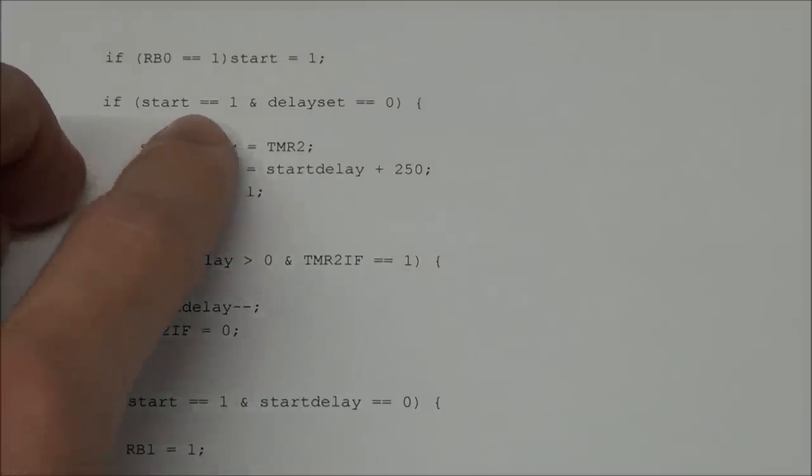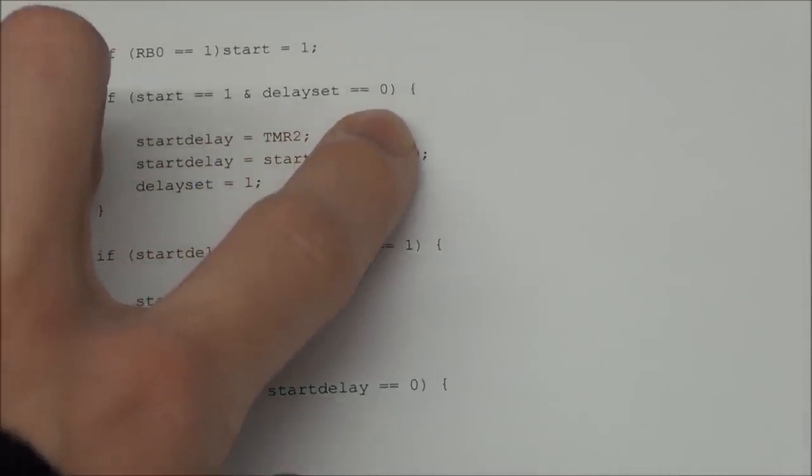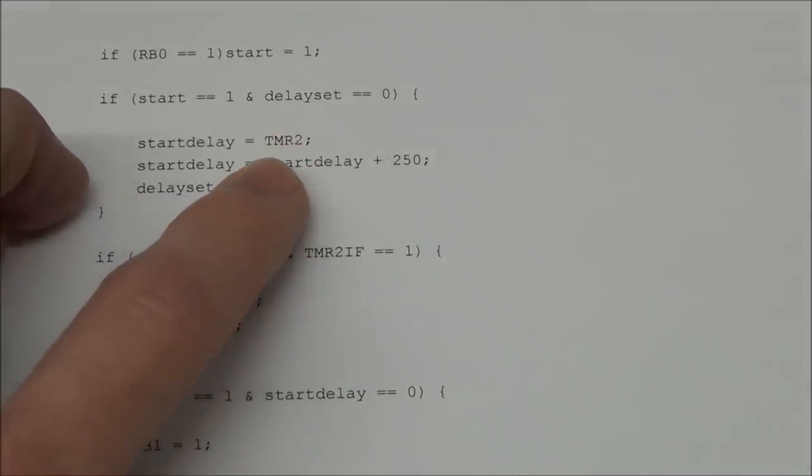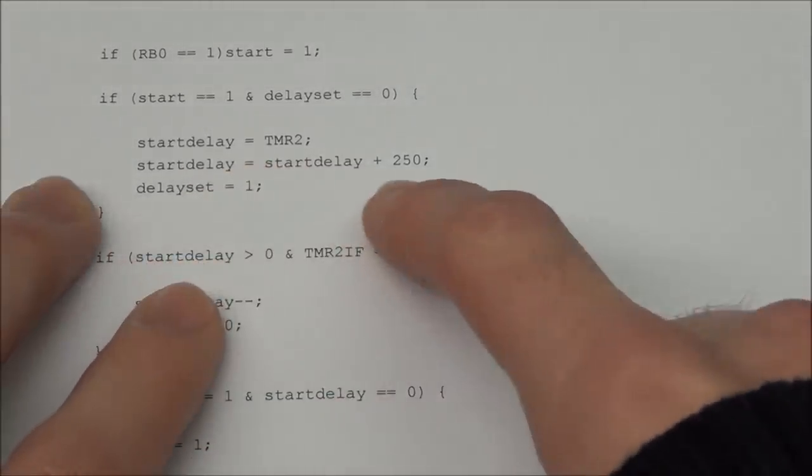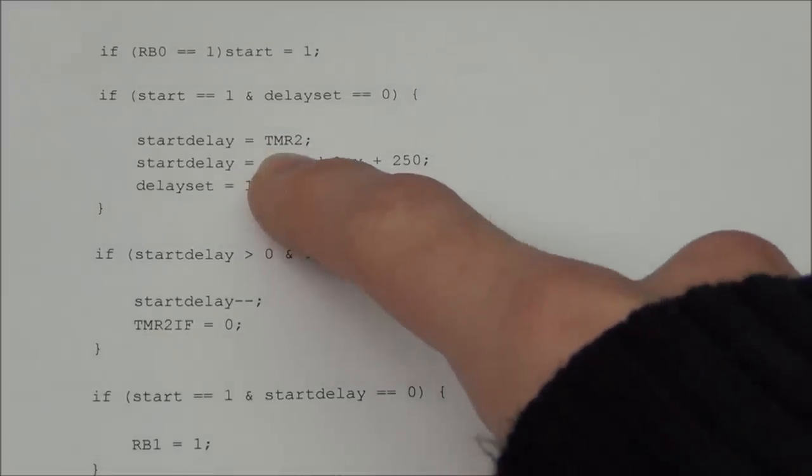And from now on we know that the game has been started. And down here it checks if start equals 1 and delay set equals 0. If this equals 0 then it knows that the game has just started and it will need to set a delay. So we will take the number that timer 2 is currently at and that depends on when you press the button so that's pretty random.